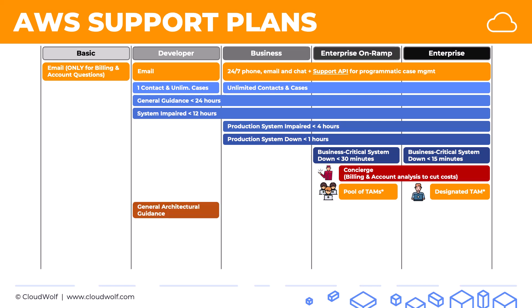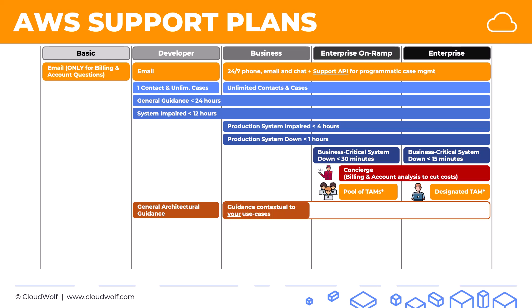For architectural guidance: in the developer plan you only get general architectural guidance. In the other three — business, enterprise on ramp, and enterprise — you get architectural guidance specific to your use cases. In business, it's guidance contextual to your use cases. In enterprise on ramp, you get a consultative review based on your applications once per year. In enterprise, you get more than one consultative review. The main thing to remember for the exam is that developer gives general guidance, while the other three give guidance specific to your use cases and applications.